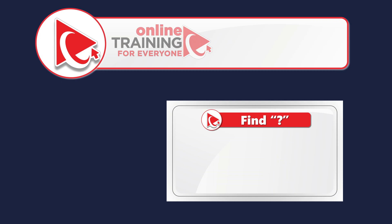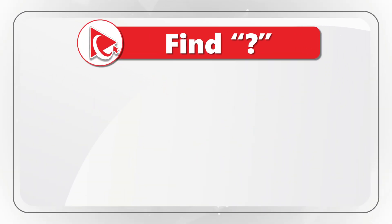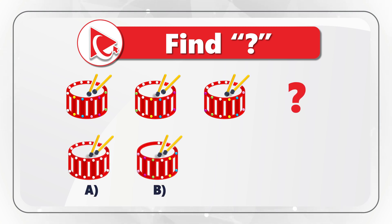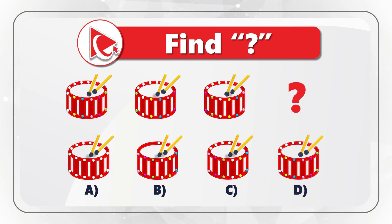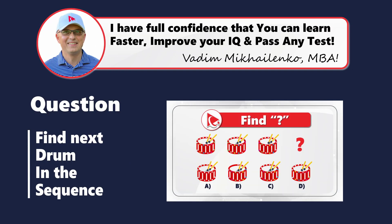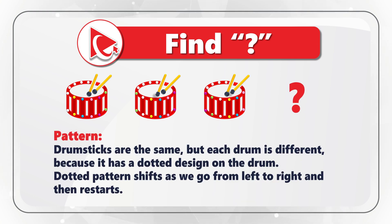Here's a very interesting drum problem which I have full confidence you will solve very quickly. You're presented with three drums and the next drum in the sequence is missing. You need to select the next drum out of four possible choices: A, B, C, and D. Take a close look. Did you figure it out? I'm moving forward to share my version of the solution.